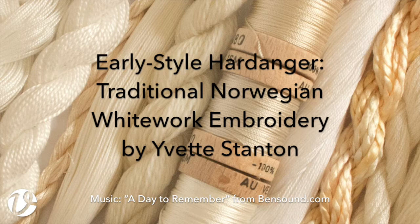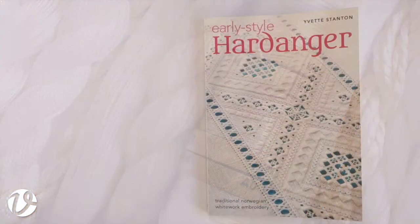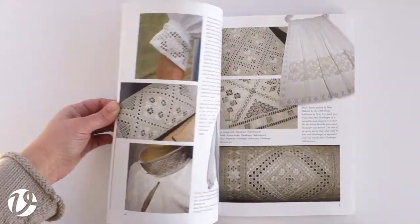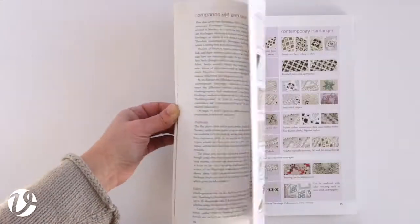Early Style Hardanger, traditional Norwegian white work embroidery by Yvette Stanton, has 160 full color pages and three pattern sheets.